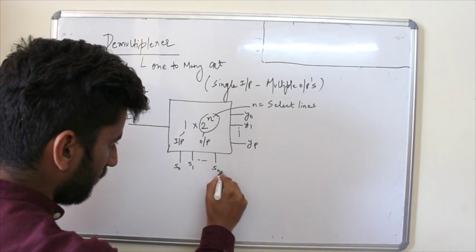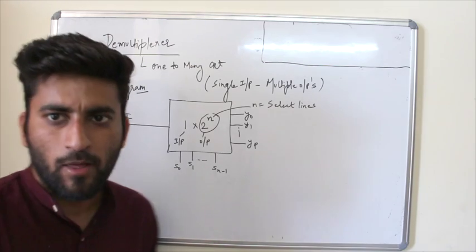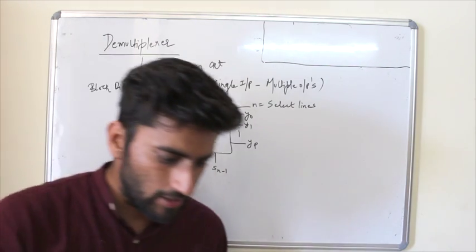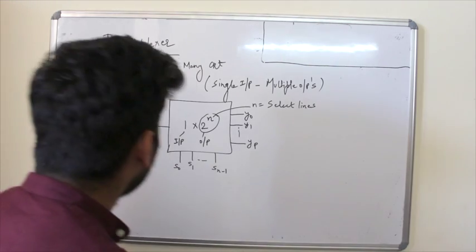And select lines are s0, s1 up to s of n-1. Okay, so this is the block diagram for my demultiplexer. Okay, let's start with the very first example in demux.